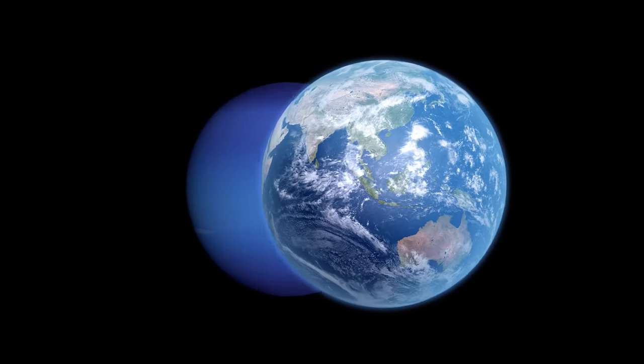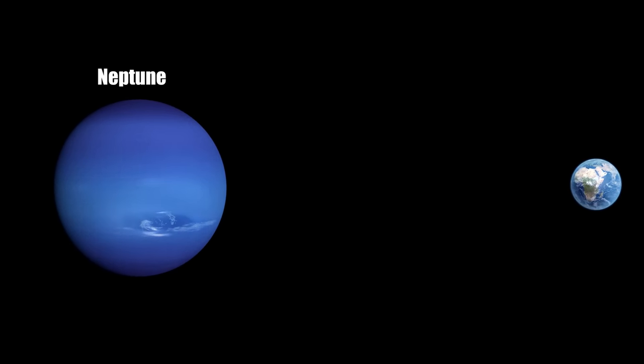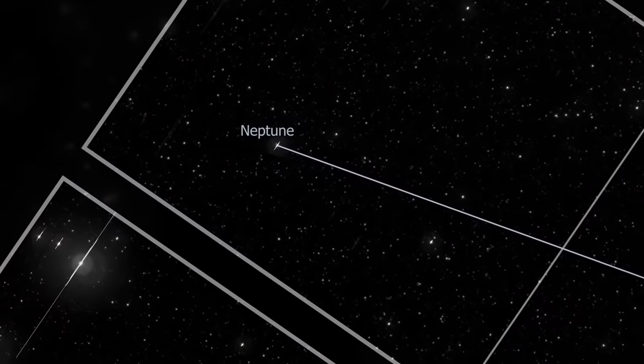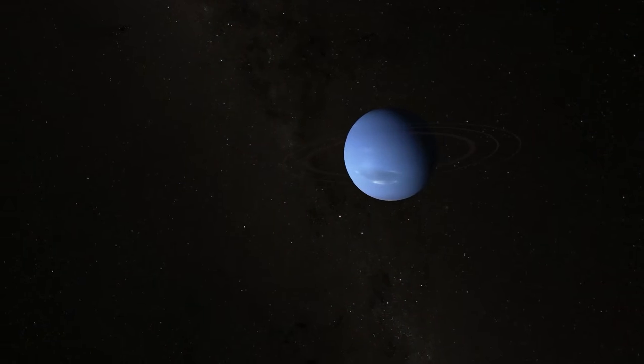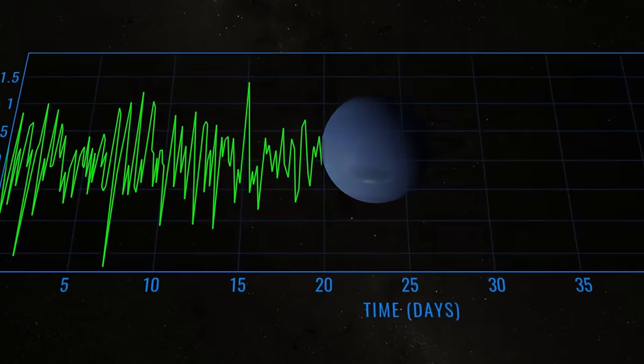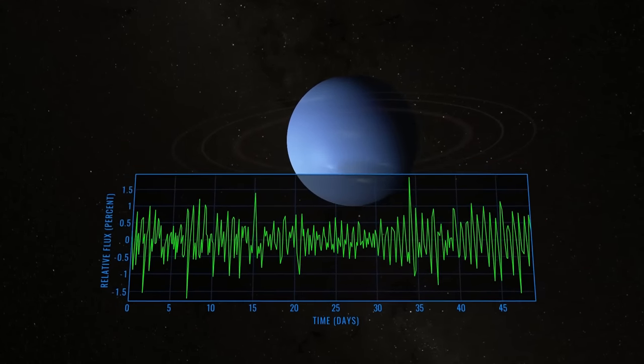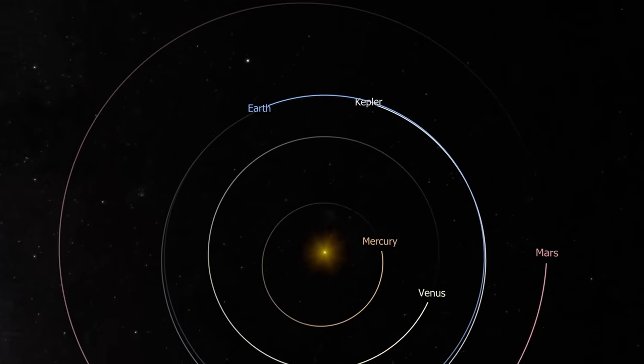As we journey to the outermost reaches of our solar system, we encounter Neptune, the distant ice giant. Lying roughly 4.5 billion kilometers from Earth, Neptune marks the edge of our solar neighborhood. Sunlight, racing across the vacuum of space, takes about 4 hours and 15 minutes to reach Neptune from the sun. This staggering distance showcases the enormity of our solar system.